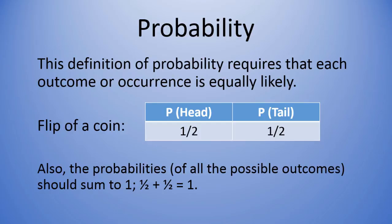And along these lines, the probabilities of all the possible outcomes should sum to one. So, in this example, one-half plus one-half is one, so it satisfies that condition as well.